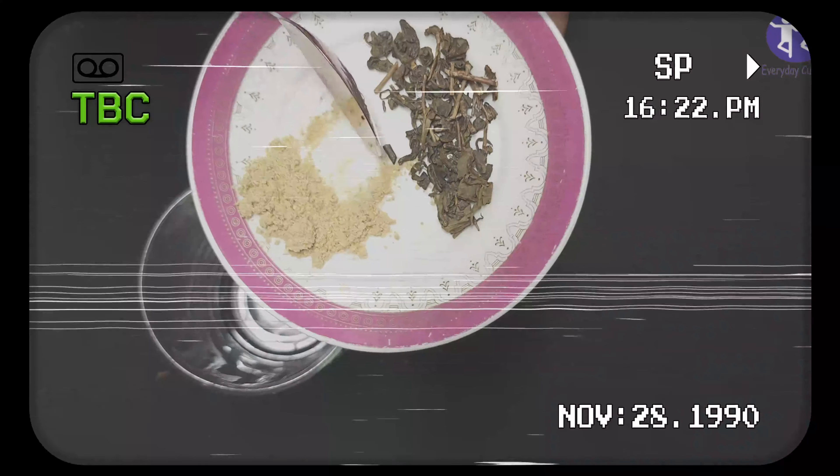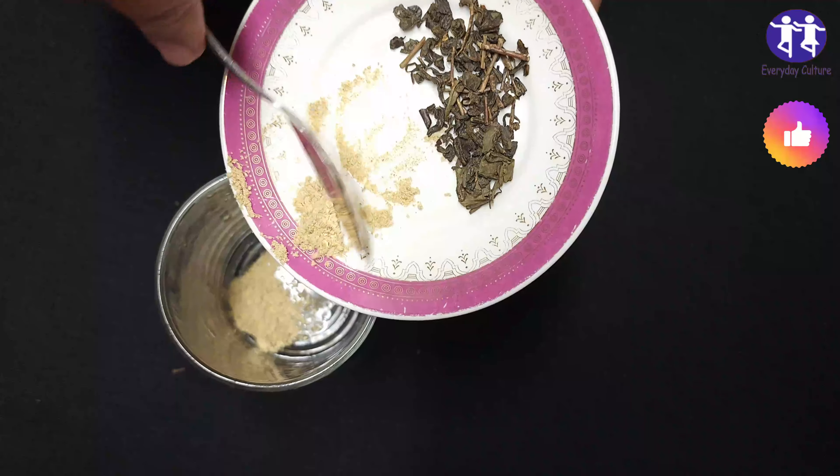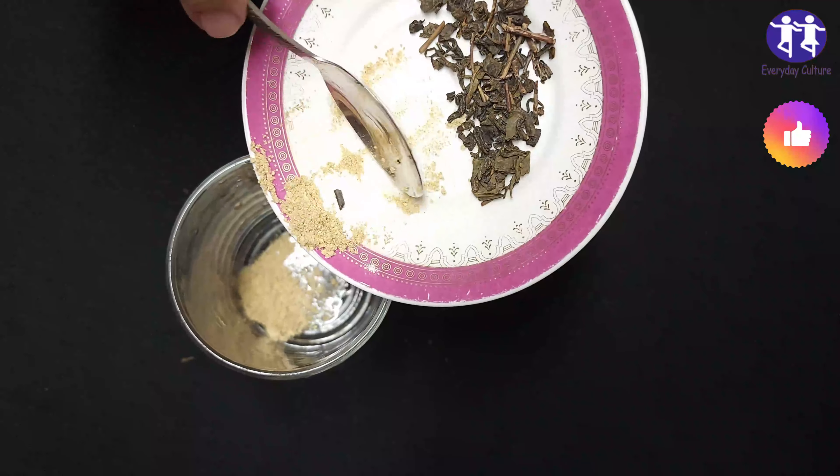Green tea and ginger are two ingredients that have been used for centuries for their medicinal properties. Here are some potential health benefits of green tea and ginger.